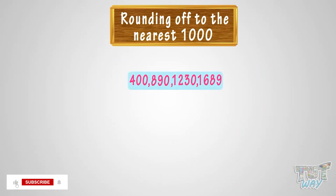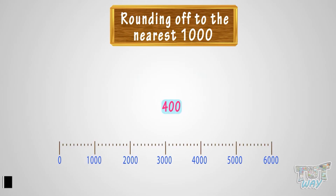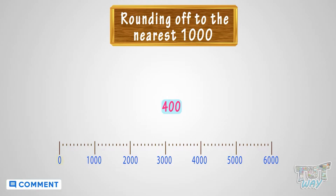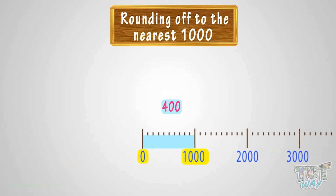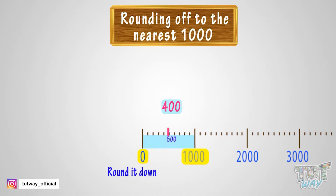Let's start with 400. See the number line? Where can you fit 400 on this number line? It is somewhere between 0 and 1000. Now we know there are always two options: either we can round the number up or round it down.